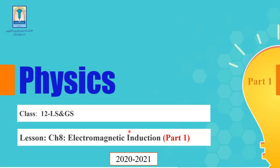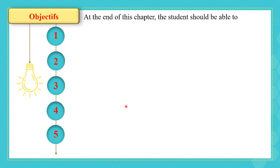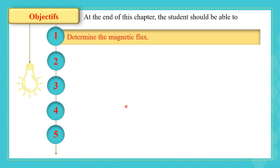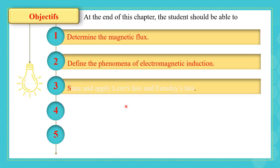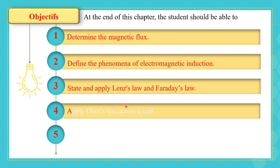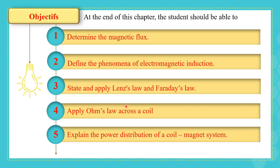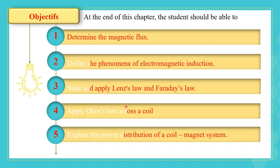Salam alaikum. In this series of videos we are going to talk about chapter 8: Electromagnetic Induction, which is the first chapter of the second unit, Electricity. At the end of this chapter we are going to be able to determine the magnetic flux, define the phenomenon of electromagnetic induction, state and apply Lenz's law and Faraday's law, apply Ohm's law across a coil, and explain the power distribution of a coil-magnet system.